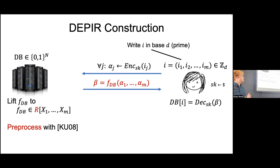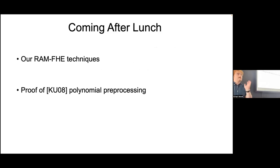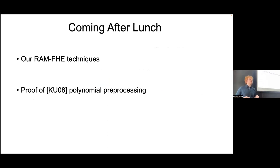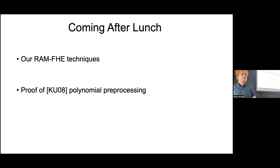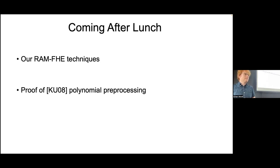As a teaser for what's coming after lunch: Wike will give a description of our RAM FHE construction at a reasonably high level in a simplified version, with comments on how to get the full version. He'll also show a proof of the Kedlaya-Umans preprocessing technique. I really believe this KU technique is incredibly beautiful — it's something that if you walk away from this talk with one algorithm in mind, I think this is what you should think of. It's a very beautiful technique that is actually very simple to understand, and Wike will give a good explanation of it in the second half. That concludes the talk. Thank you.